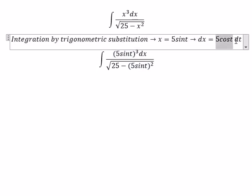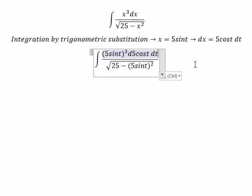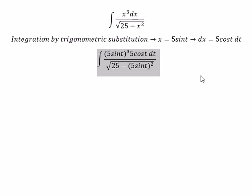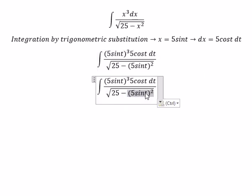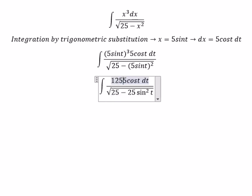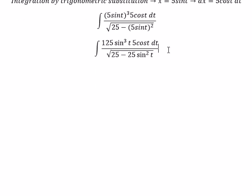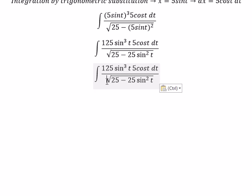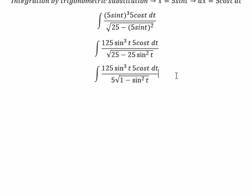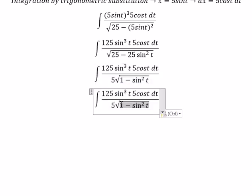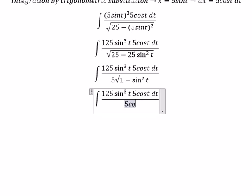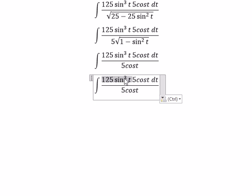We change x for this one. So we got 25 sin²(t), and this one we got 125 sin³(t). The square root of 25 gives us 5. Then 1 minus sin²(t) gives us cos²(t), and the square root of cos²(t) gives us cos(t). These terms cancel and we got 125 sin³(t).